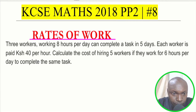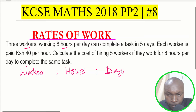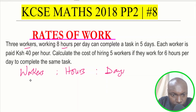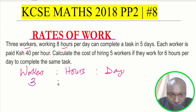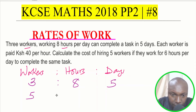To solve this question, we create a table with three columns: one for workers, one for hours, and one for days taken to do the work. Given that three workers work eight hours a day and complete the task in five days, we write those values in. We need to find the cost of hiring five workers working six hours a day, and we don't yet know the number of days they will take.